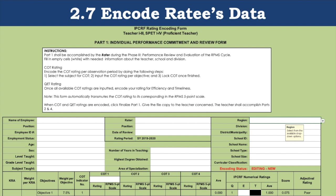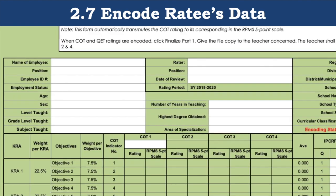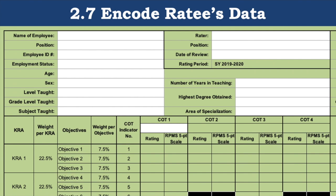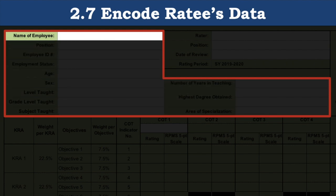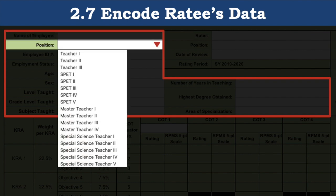Let's proceed to the next step, encoding the ratee's data. There are several fields. Let's begin with the name of the employee — again, we recommend the format last name, comma, first name, then middle initial. Next, you select the position, which is a drop-down option between teachers 1 to 3, SPED teacher 1 to 5, master teachers 1 to 4, and special science teachers 1 to 5. Remember that when you change the data for this field, it also changes the form.